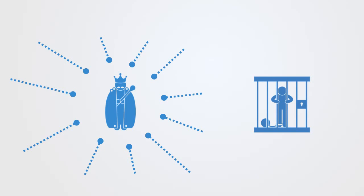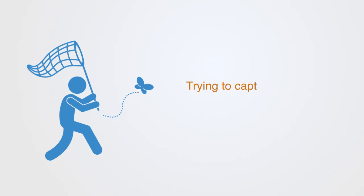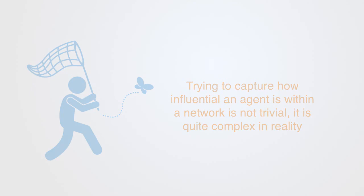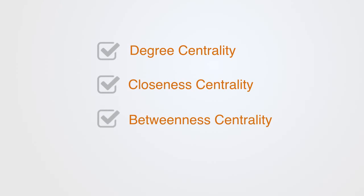There is no single correct answer to these difficult questions. Trying to capture how influential an agent is within a network is quite complex, and thus researchers in network science use a number of different metrics, including degree centrality, closeness centrality, betweenness centrality, and prestige centrality.